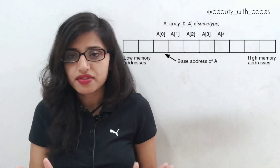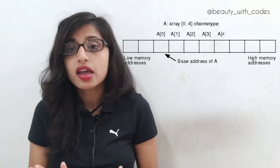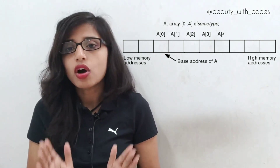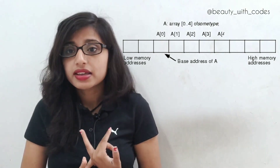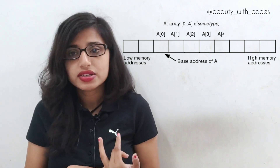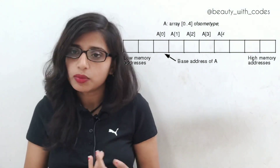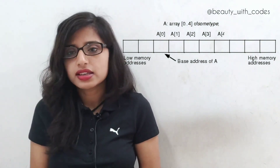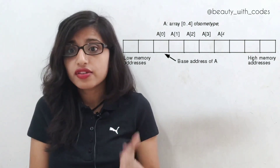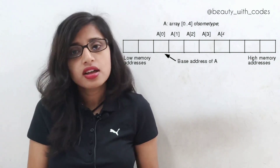Don't get confused between an array's address and array index — these two are completely different concepts. Index normally starts with zero, because memory address starts with zero. In some special cases, if given in your question, it may start at one also, but normally it's zero.